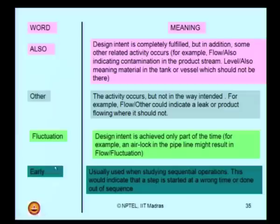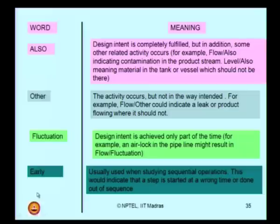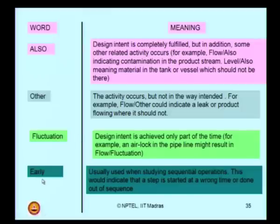You can also have a secondary keyword called 'early,' usually used when studying sequential operations. For example, I have a style of operation to be followed in a specific order, but this keyword tells me that some operation would have occurred early — earlier than it must have started. The operation has started at the wrong time or occurred in the wrong sequence. 'Early' combined with either flow or pressure can indicate the deviation from the specific design intent.